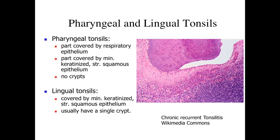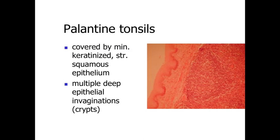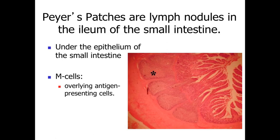Both the pharyngeal and lingual tonsils are found in this area. Pharyngeal tonsils are lymph nodules covered partly by respiratory epithelium and partly by minimally keratinized stratified squamous epithelium. Lingual tonsils are characterized by a covering of minimally keratinized stratified squamous epithelium and may have a crypt, where saliva with materials in it can be drawn down into the region of the lymph nodules. The palatine tonsils are covered by minimally keratinized stratified squamous epithelium and have numerous deep epithelial invaginations — deep crypts — which draw in saliva and food materials to be sampled by antigen-presenting cells and lymphocytes within the tonsils.